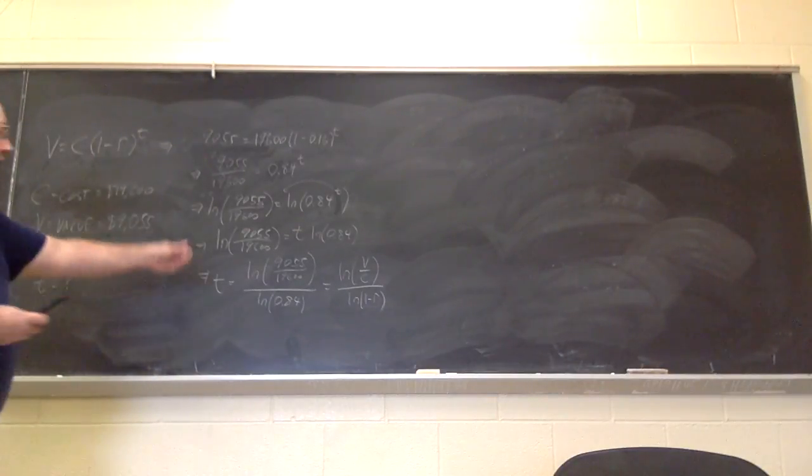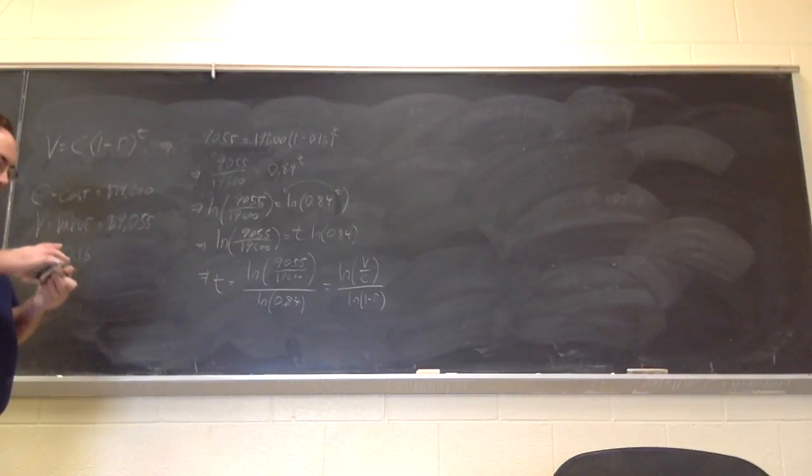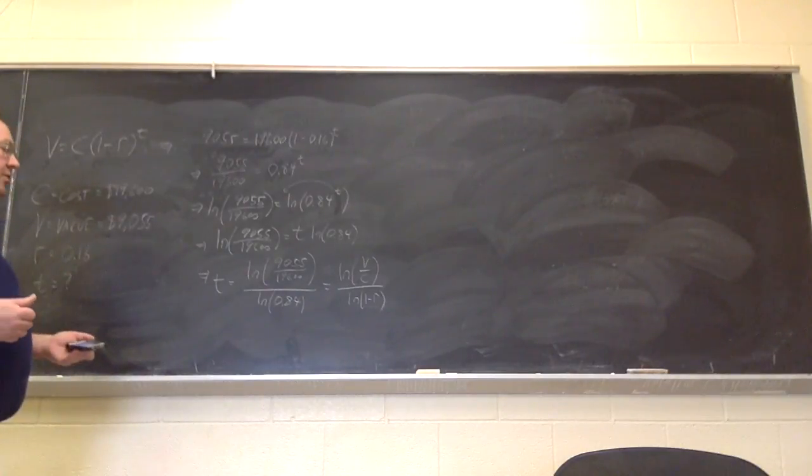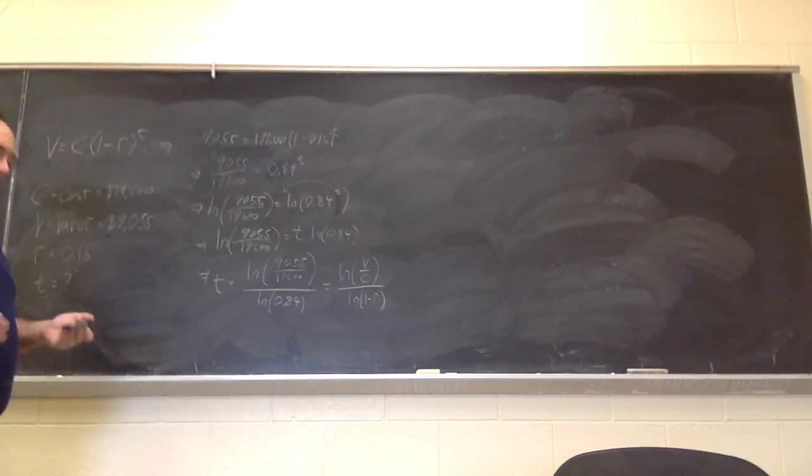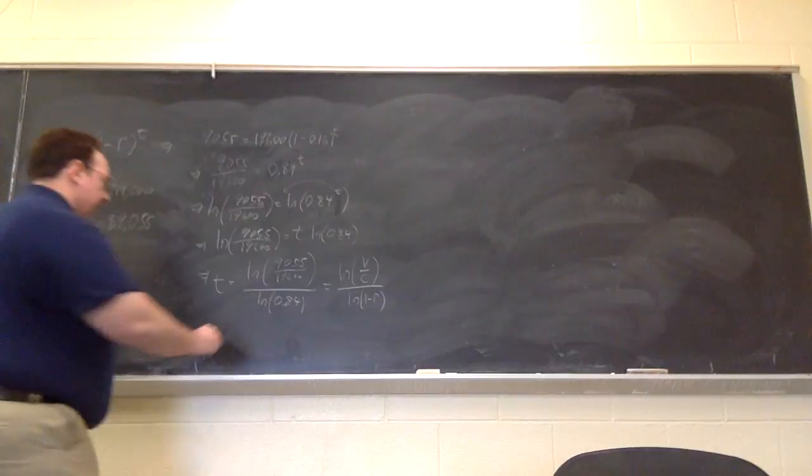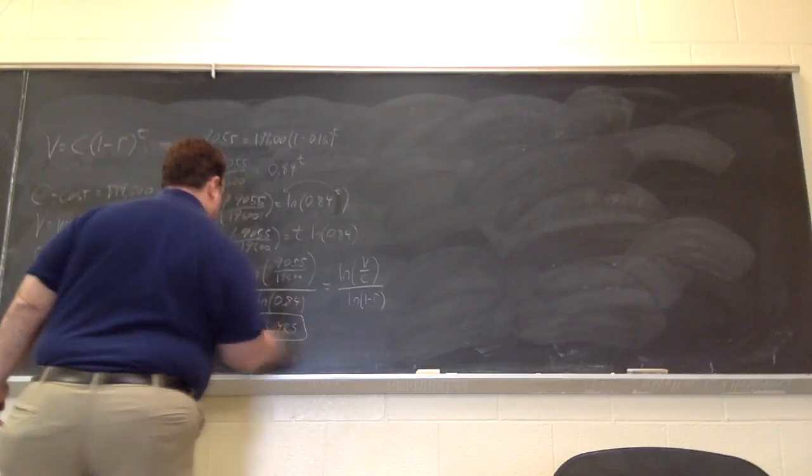So now I'm going to work this out on my calculator. I'll round to two decimal places. So I have 9,055 divided by 19,600. I'm going to take the natural log of that. It's going to be a negative number because this fraction is going to be less than 1, so log of a number less than 1 is going to be negative, divided by 0.84 natural log, also negative. So both the numerator and the denominator in this fraction are negative, so the overall result is positive. And what I get is 4.43 years is the final answer.